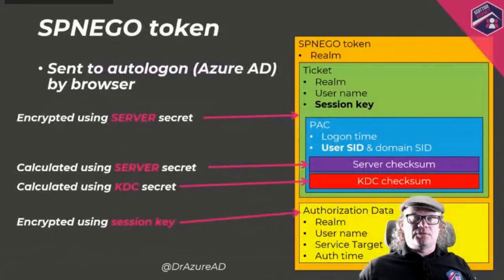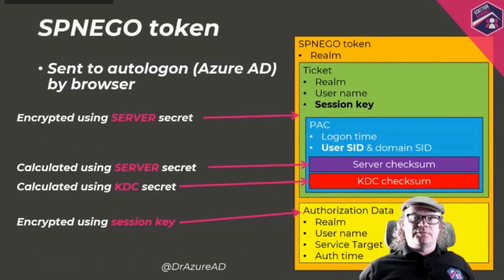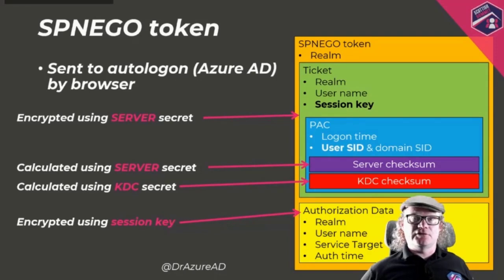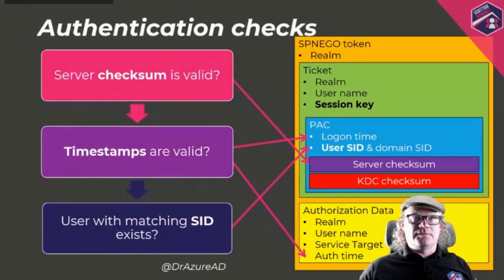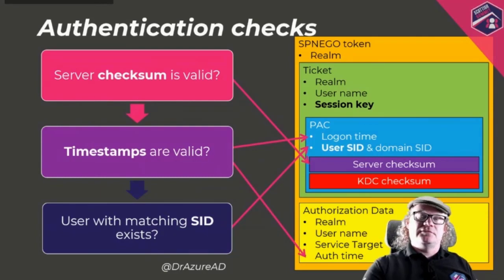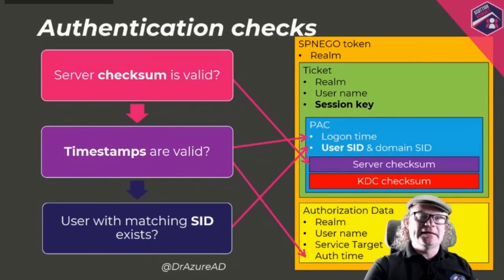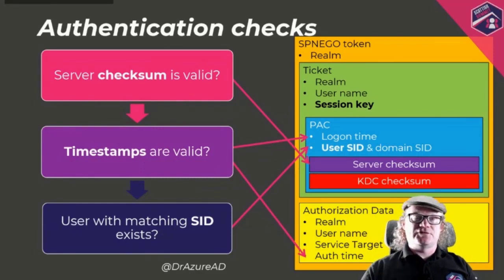What does the actual Kerberos ticket look like? The most important part is the PAC — Privilege Account Certificate — which includes a service checksum calculated using the server secret. Azure AD actually checks that the service checksum is valid against the password sent to Azure AD when this was configured, that the timestamps are valid, and most importantly that there's a user in Azure AD with a matching SID included in the particular ticket.